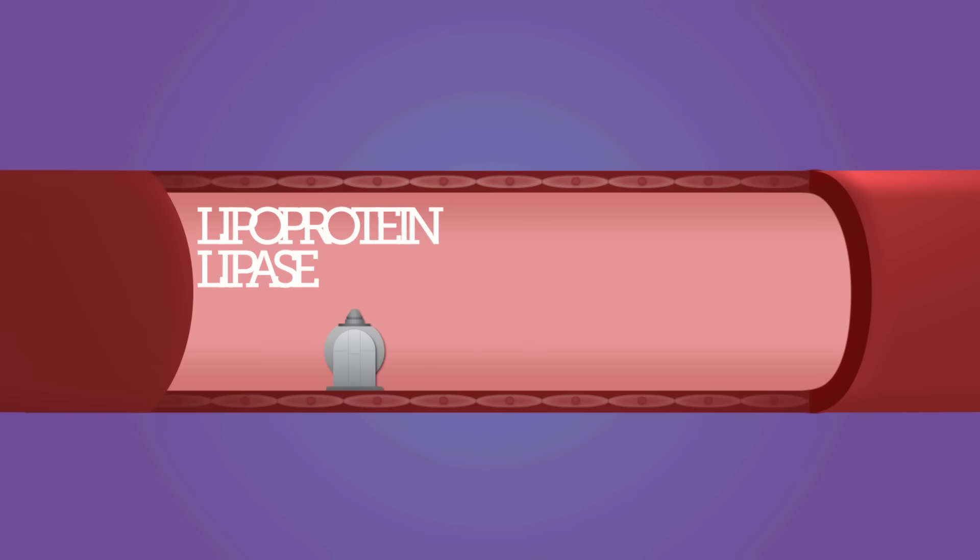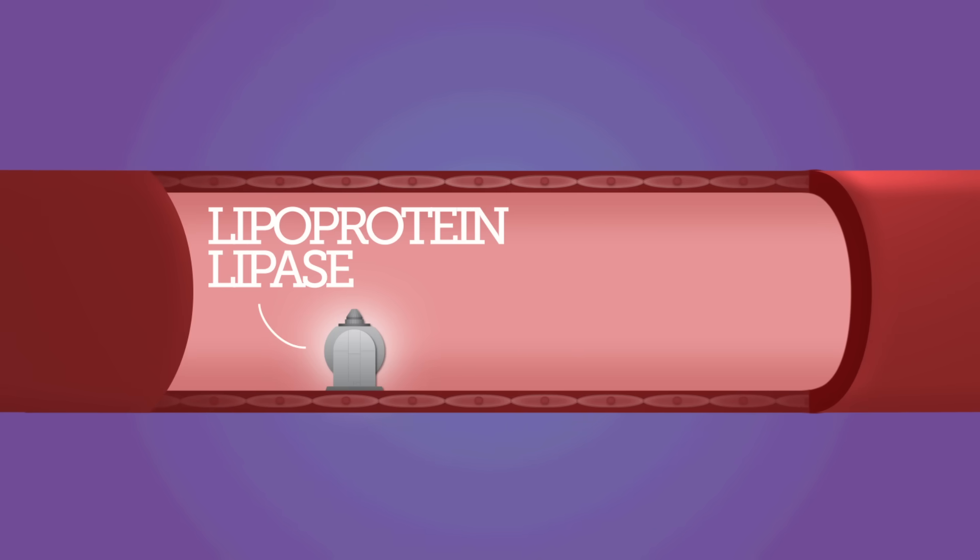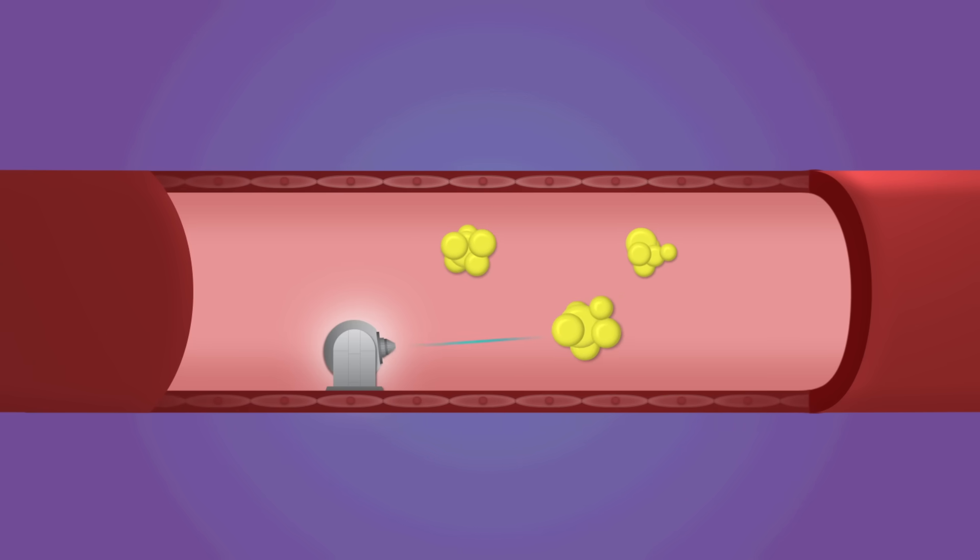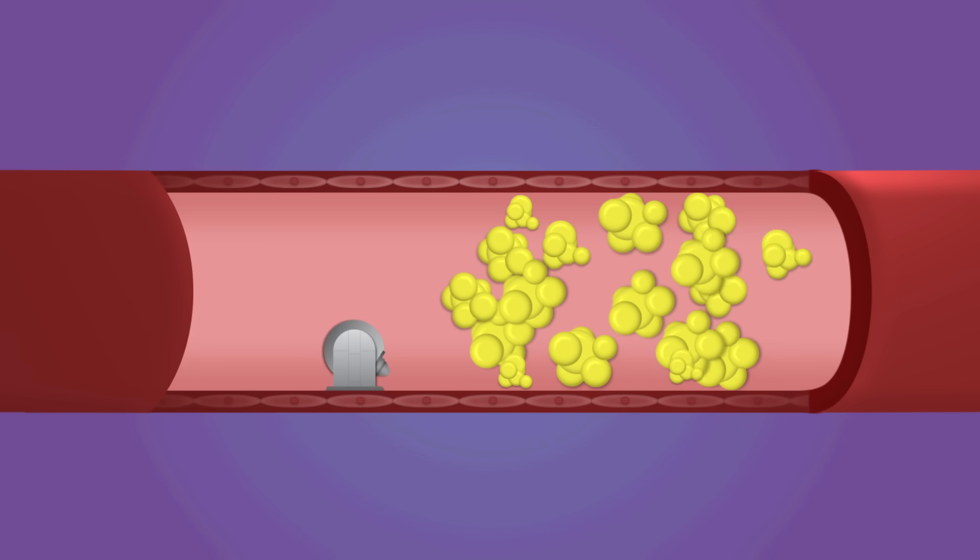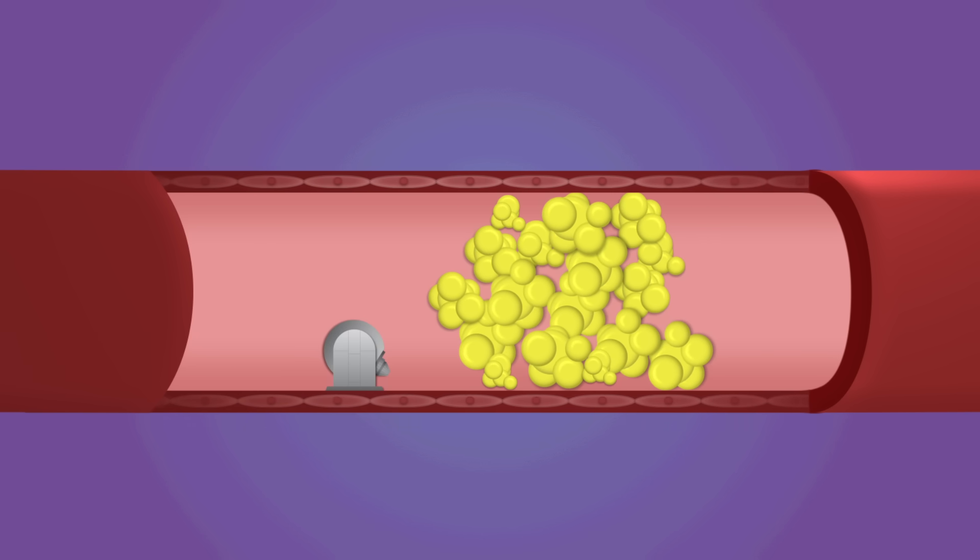Sitting for long periods also temporarily deactivates lipoprotein lipase, a special enzyme in the walls of blood capillaries that breaks down fats in the blood. So when you sit, you're not burning fat nearly as well as when you move around.